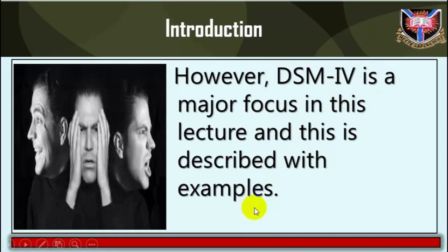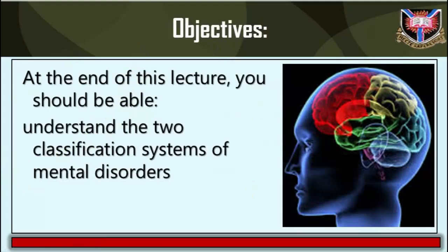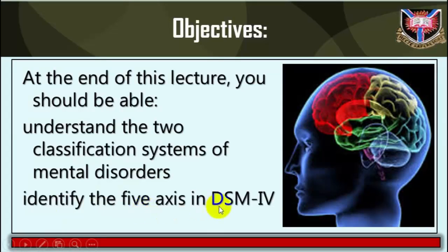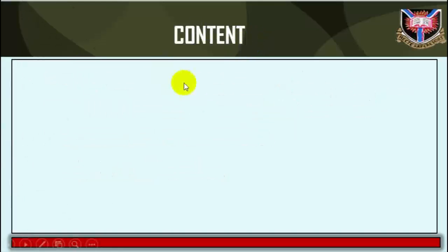Objectives: At the end of this lecture you should be able to: one, identify the two classification systems of mental disorders; two, identify the five axes of DSM-IV; three, briefly explain why the five axes are used in DSM-IV with an example of a disorder; and four, explain what the GAF scale is.